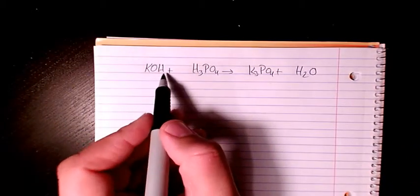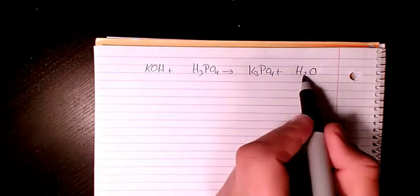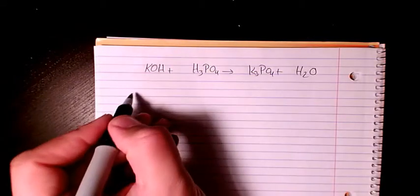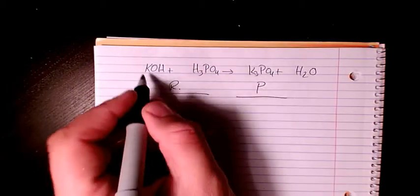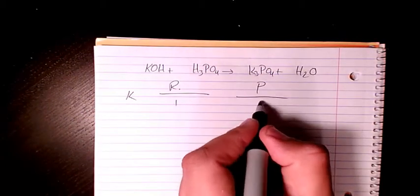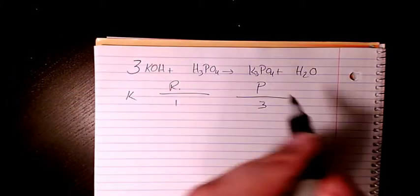equation. We have KOH plus H3PO4 gives K3PO4 plus H2O. So I start with K on the reactant side and product side. Reactants, we have one, and products, we have three, so I need to put three in here.